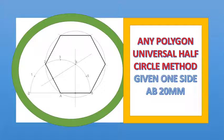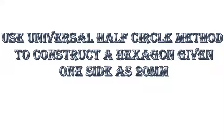So, let's take, for example, a hexagon. Use the universal half circle method to construct a hexagon given one side as 20 millimeters. So that's the question that we are going to answer.